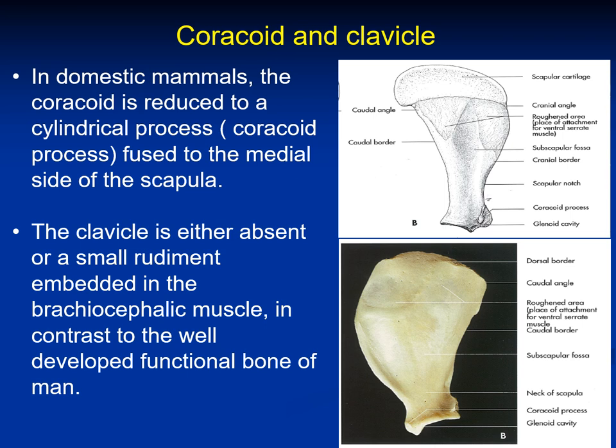We will start with the first part of the appendicular skeleton, which is the bones of the forelimb — consisting of the scapula, humerus, radius and ulna, carpal, metacarpal, and phalanges. In humans we have two additional bones: the coracoid and clavicles. In domestic mammals, the coracoid is reduced to a cylindrical process — the coracoid process — fused to the medial side of the scapula. For the clavicle, it is either absent or a small rudiment embedded in the brachiocephalic muscle, in contrast to the well-developed functional bone in man.